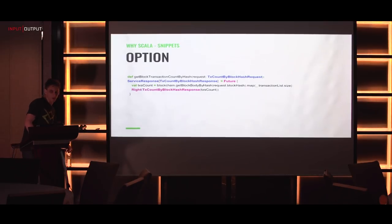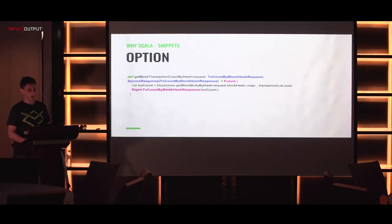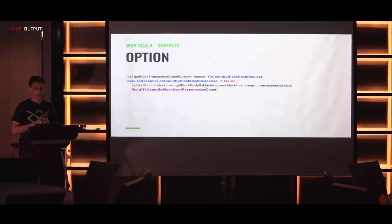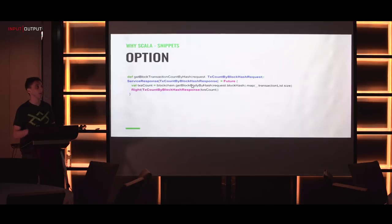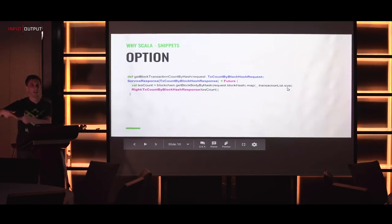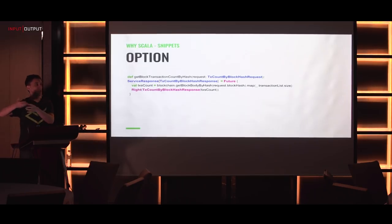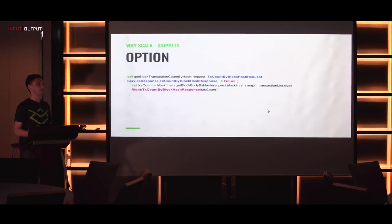There is no if statement here. We call 'blockchain.getBlockBodyByHash' to retrieve the body - if it's None, the map function won't do anything, it will just return None without trying to access the value. But if this function returns a block body (a Some), we can take the value, apply 'transactionList.size' to count the transactions, and it puts the result back into the Some container. No null pointer exceptions, no if statements - it's quite nice. You can represent None as null for end users, but within your code you don't need to deal with those issues.